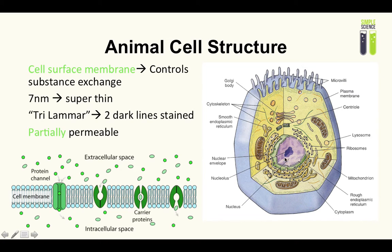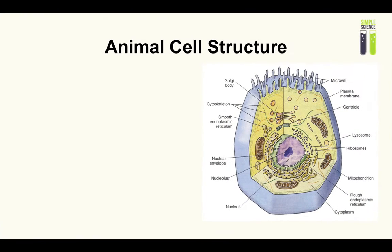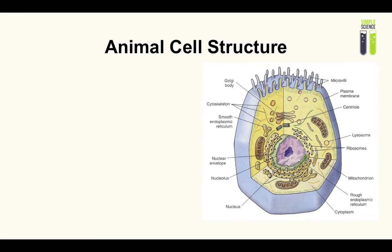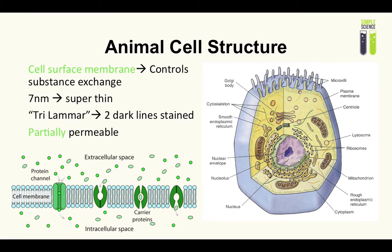It's partially permeable. The next thing which we have is the microvilli. Now the microvilli are just these finger-like extensions. If you want to describe it more specifically, it's just the extension of the cell surface membrane and it has the same function as the cristae. It increases surface area for reactions and therefore it increases efficiency.